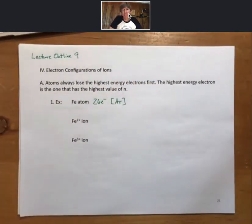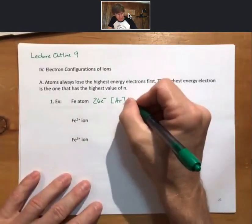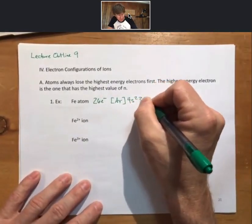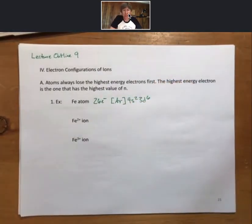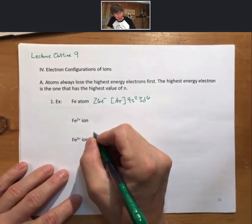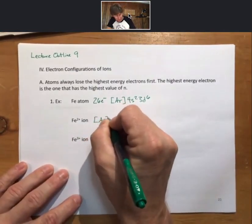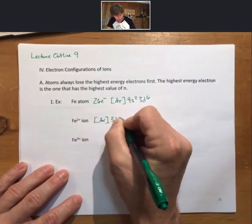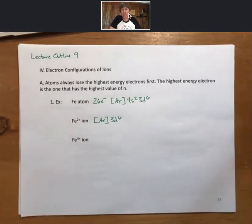Same first 18 electrons as argon, 4s2, 3d6. As we go to the iron 2 ion, we lose two electrons. Those are the 4s2 electrons.